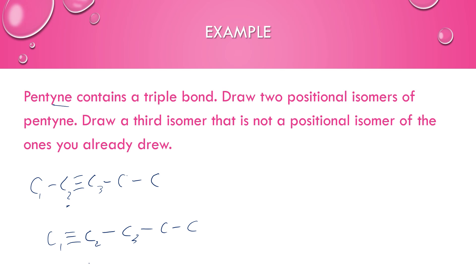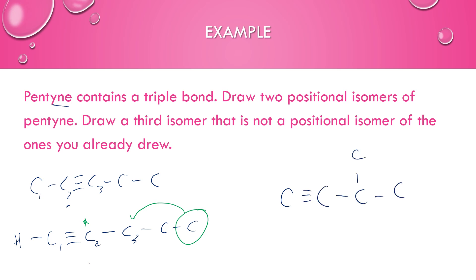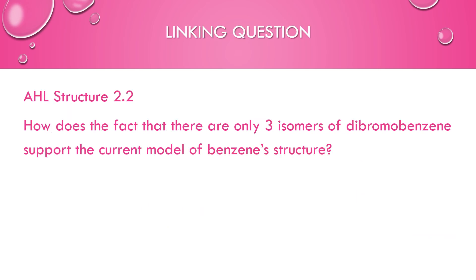For the third structural isomer that is not a positional isomer, remember the strategy: take a carbon off the end and move it to the middle of the chain. You can't add a branch onto the triply bonded carbons as they already have full bonds. Moving a carbon to the middle carbon position gives a structure with C≡C and a methyl branch, which would be 3-methylbut-1-yne. That is a structural isomer of pentyne, but not a positional isomer.